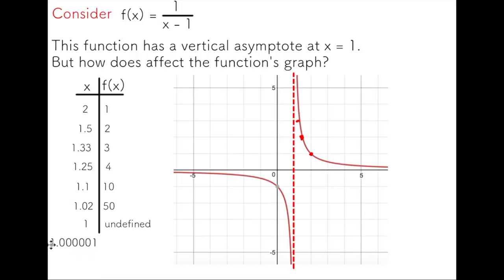In fact, if I get very, very close to one, 1.00001, the resulting value is a million. So you can see that this is going to continue if I sub in numbers closer and closer to one. Because of this, we say x is restricted at x equals one, and there's a vertical asymptote at x equals one.